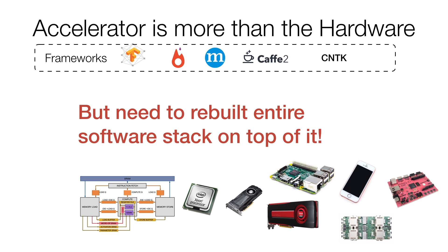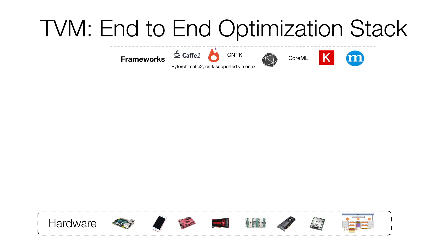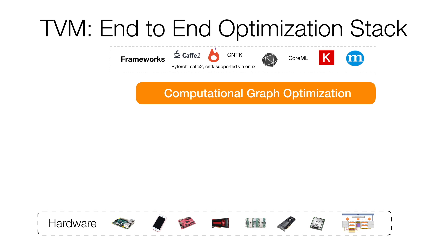How can we solve this problem? That's one of the questions we've been asking over the past year, and that's the work we've been doing over the past one and a half years on the TVM stack. The general idea is that we want to build a bridge between front-end user-defined frameworks like MXNet and other frameworks, and have a way to lower those programs automatically or semi-automatically onto the hardware they want to support. One typical approach most frameworks have taken so far is what we call computational graph optimization.